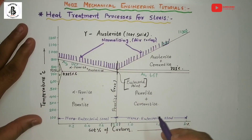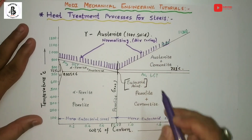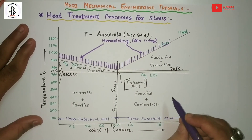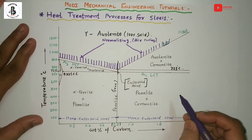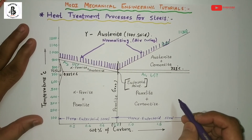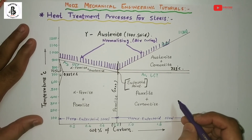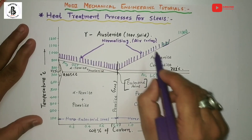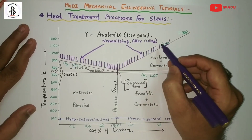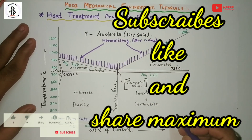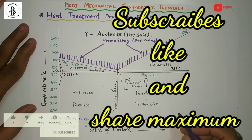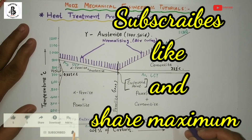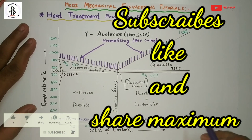In general, the objectives of the normalizing process are: to soften the metals, refine the grain structure, improve machinability, improve grain size, and prepare the steel for subsequent heat treatment processes. This covers everything regarding the normalizing process. If you liked this, please subscribe and share Modi Mechanical Engineering Tutorials. Thank you and keep watching.